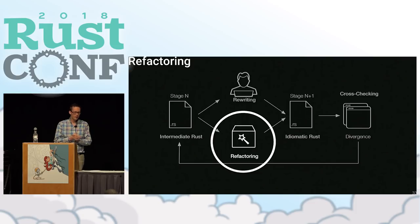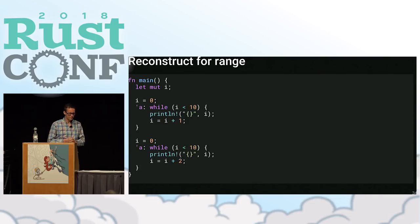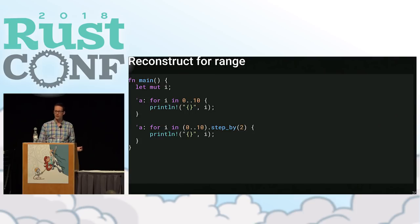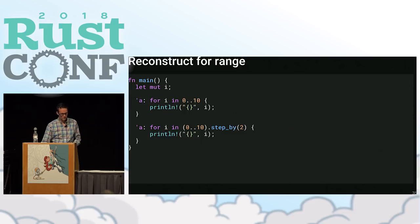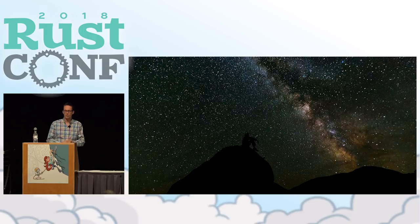Finally, we also want to do refactoring — this is the least mature area of our work right now. As a simple example, we have some while loops that step from zero to nine with a stride of one and two. We have simple patterns that can recognize this is better expressed as a for-range loop in Rust. We hope to get to substantially more advanced refactoring across files, involving substantial amounts of program analysis to do much more useful things.